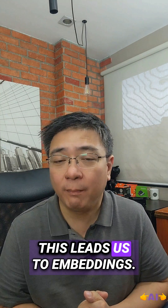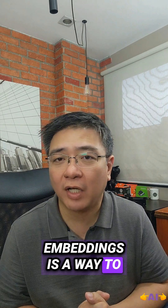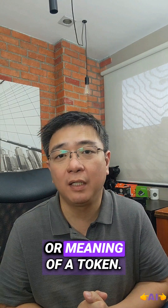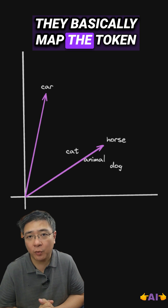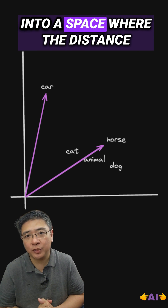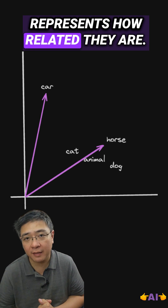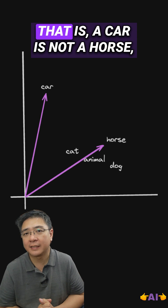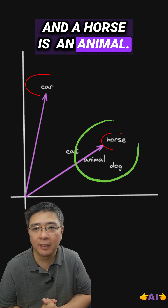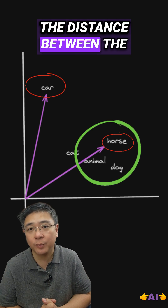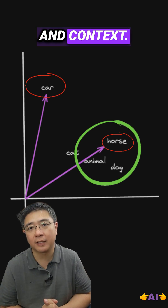But how do machines understand that the word apple refers to a fruit and not a company? This leads us to embeddings. Embeddings is a way to capture the semantic context or meaning of a token. They basically map the token into a space where the distance represents how related they are. That is, a car is not a horse, and a horse is an animal.